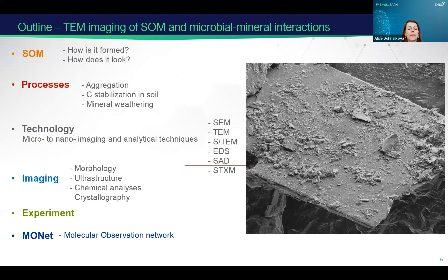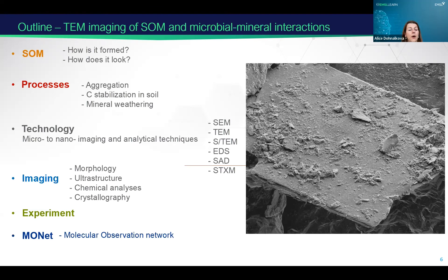What can we achieve by imaging? We're looking at morphology and ultrastructure on the nanometer scale. We can also do chemical analyses by elemental mapping and by diffraction, everything coupled with the electron microscope. I'll also make a brief advertisement for our newly launched EMSL initiative MONA — the Molecular Observation Network.